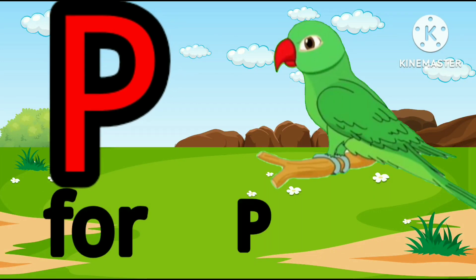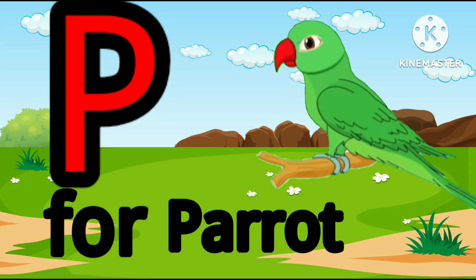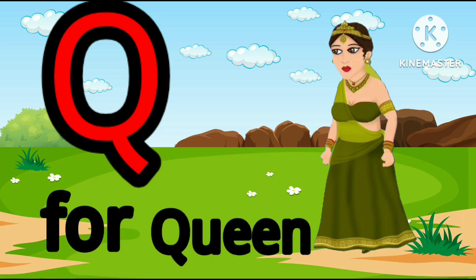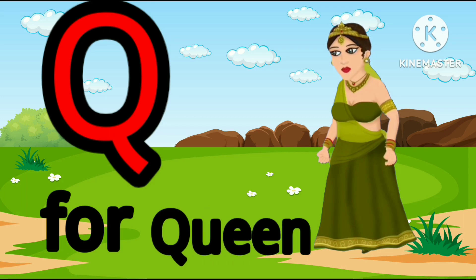P. P for parrot. Parrot means totah. Q. Q for queen. Queen means rani.